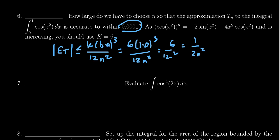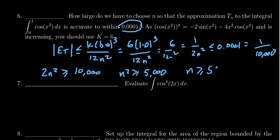We want our error to be less than 0.0001, or in other words, 1/10,000. We want to solve this inequality. Taking reciprocals, we see that 2n² ≥ 10,000. Divide both sides by 2: n² ≥ 5,000. Taking the square root: n ≥ √5,000.